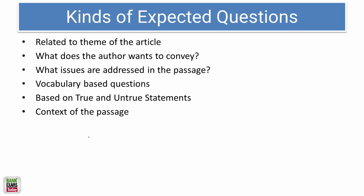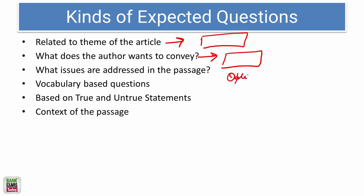Now, what types of questions can you expect in the RC? It can be related to the theme of the article — what exactly the article is about — and you may have to write the theme. There can also be a question on the tone of the author: whether the author is informative, optimistic, or submissive. The tone of the author is basically what the author wants to convey or what the author feels about the subject.